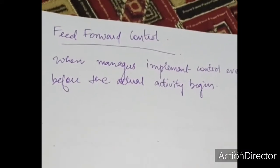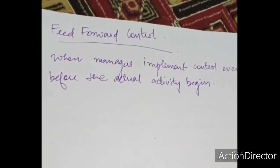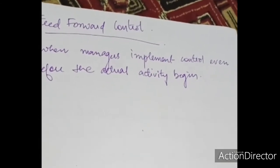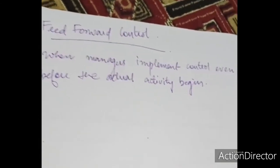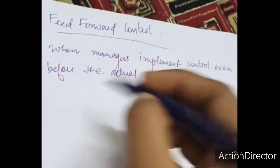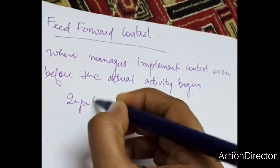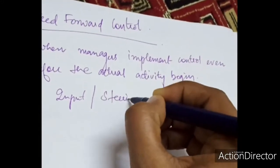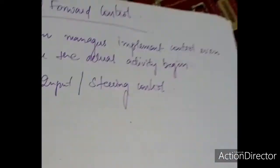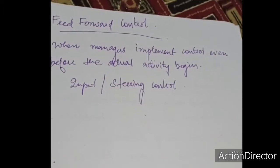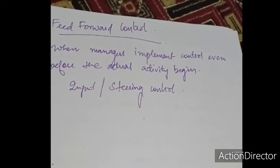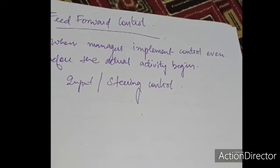This is feed forward control, when managers implement control even before the actual activity begins. The feed forward control is also known as input control or steering control. This type of control focuses on the human resources, physical resources, and financial resources that become the input for the transformation process.